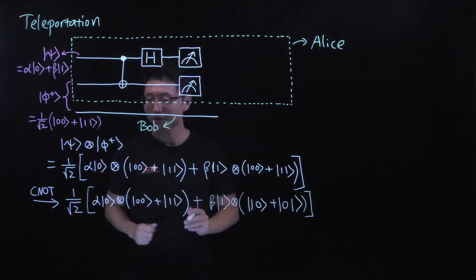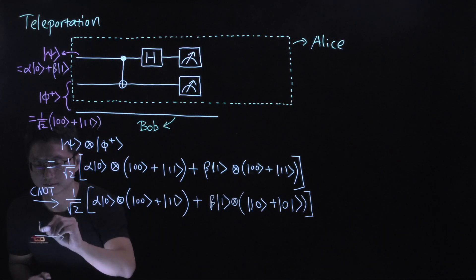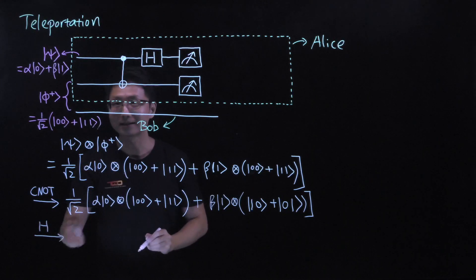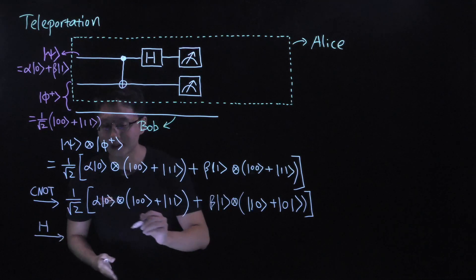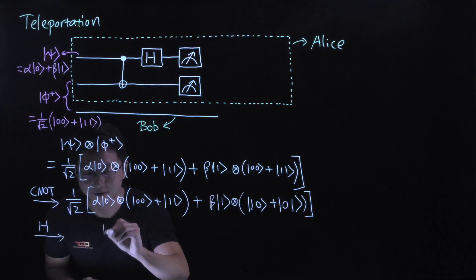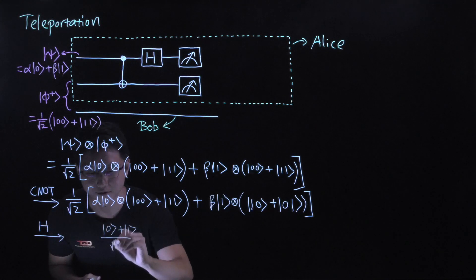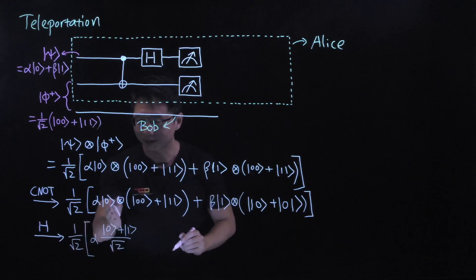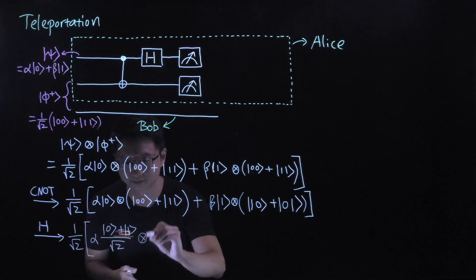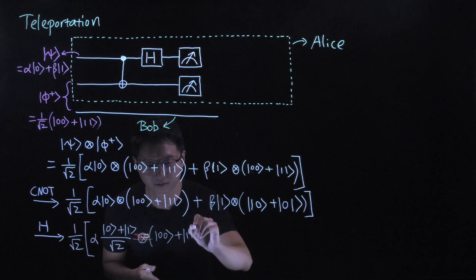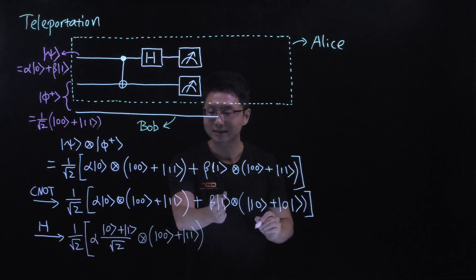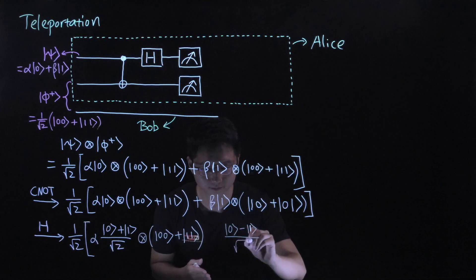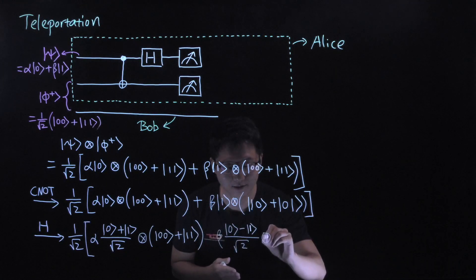Alice then applies a Hadamard gate on the first qubit — nothing is done on the second and third qubits. That will only affect the first qubit, so |0⟩ will be turned into a superposition (|0⟩ + |1⟩) / root 2, and the state |1⟩ will be turned into (|0⟩ − |1⟩) / root 2, while the rest of the coefficients are copied.